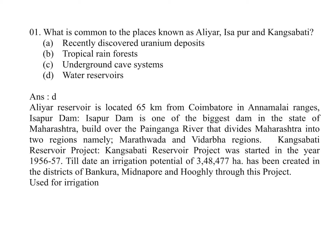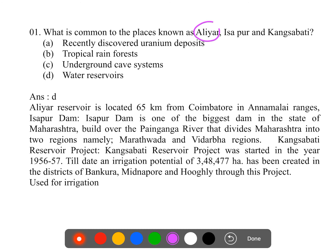Today I am here to present a discussion on Sunday's UPSC Prelims question paper 2019. I am handling the GS geography part. The first question is: what is common to the places known as Aliyar, Asiapur, and Kangsavati?